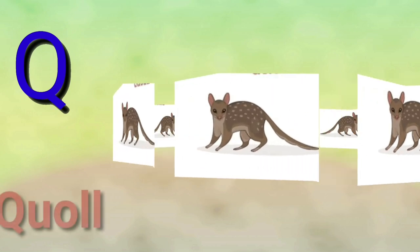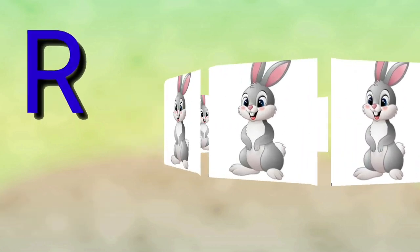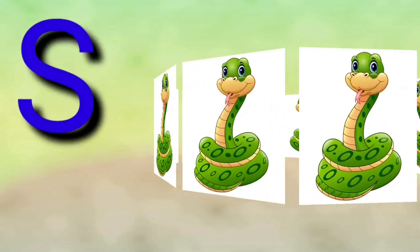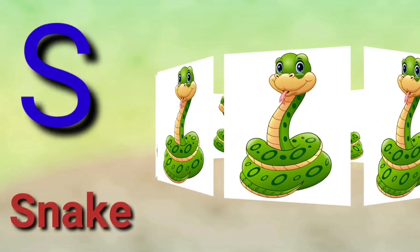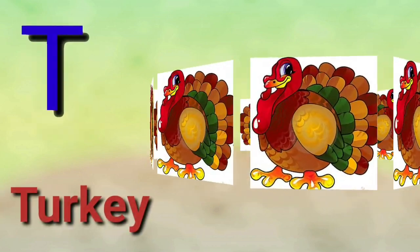Q for quail. R for rabbit. S for snake. T for turkey.